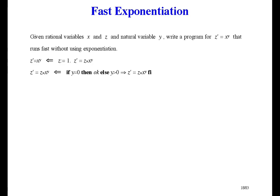The other case — the else part — is so direct I won't write it. Now we have to refine the else part. Y tells us the number of factors of X still to be multiplied in, and Y is greater than 0, so the easiest way is to multiply in one more factor of X, decrease Y by 1, and then finish the job.